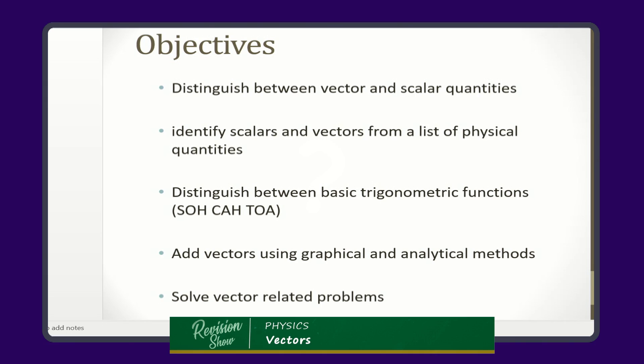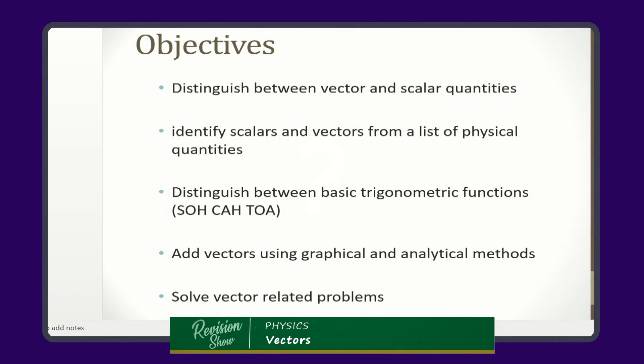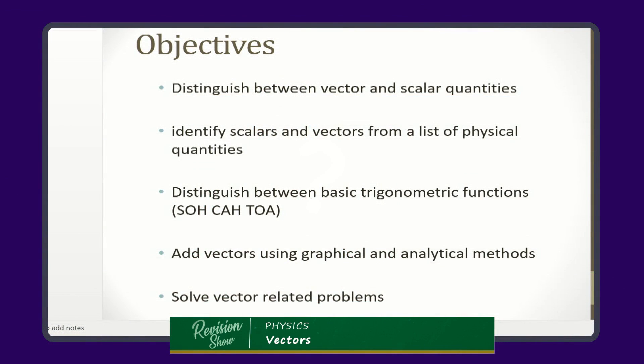Then you should be able to distinguish between the basic trig functions. We met them during the time we were doing vectors and some of our mathematical expressions — we met the SOHCAHTOA, where we have the sine function being opposite over hypotenuse, the cosine function as adjacent over hypotenuse, and then our tangent function being the opposite over the adjacent. Tonight we shall revisit them and look at how they differ. And then also, we should be able to add vectors. My brothers and sisters out there, this is where we are going to have challenges — adding of vectors. Tonight we shall be looking at the graphical method of adding vectors and also the analytical methods of vector addition. And then finally, you should be able to solve vector-related problems.